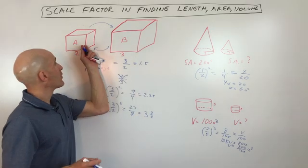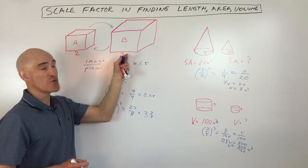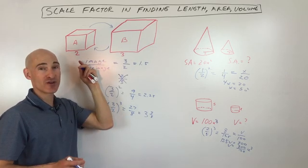And remember, when you're going from A to B, it's actually B's length divided by A's length. It's the new one, the image, divided by the pre-image, the one before.